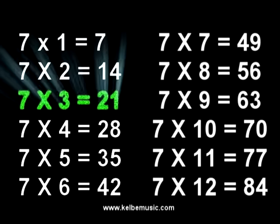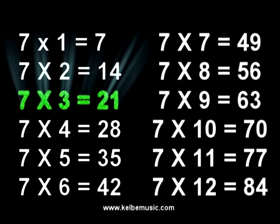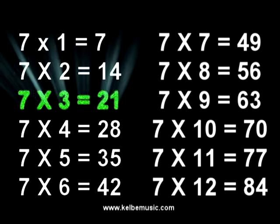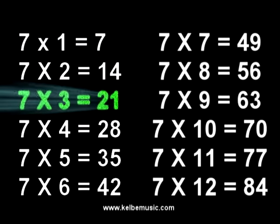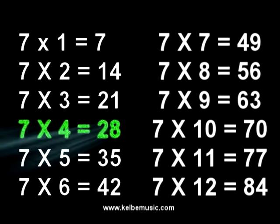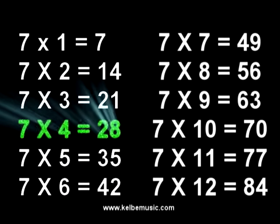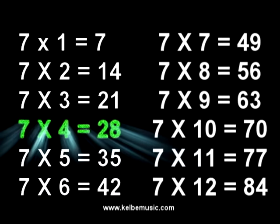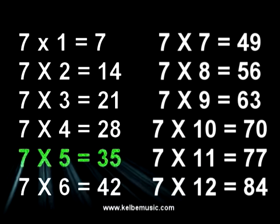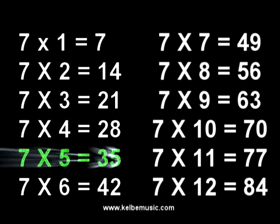Seven times three is twenty-one, twenty-one. Seven times four is twenty-eight, twenty-eight.